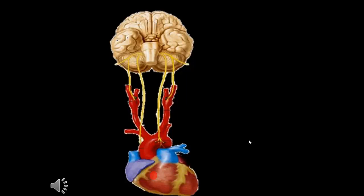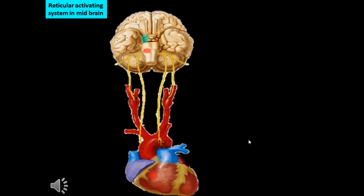The SA node, located in the heart, is under the influence of the cardioregulatory center, which is affected by the reticular activating system in the midbrain, which is in turn influenced by any cortical activity.